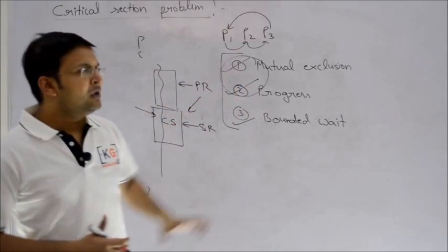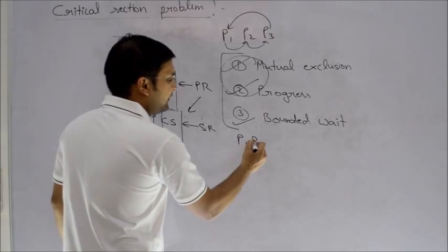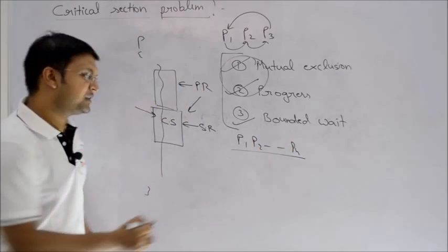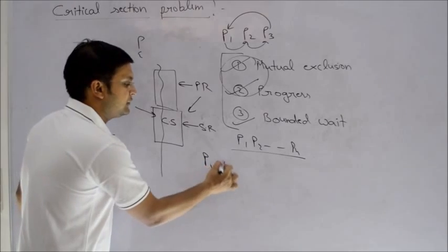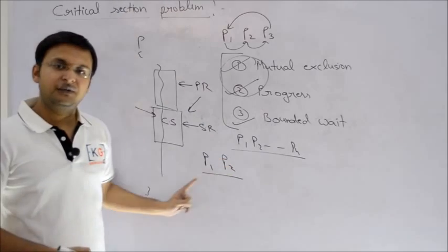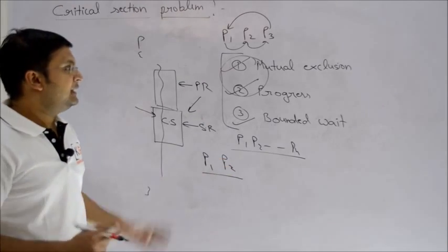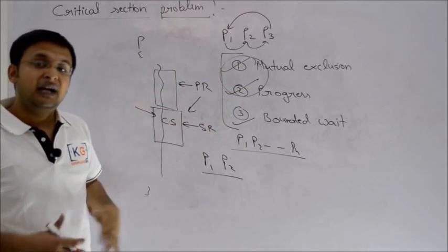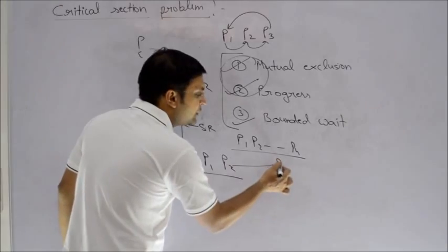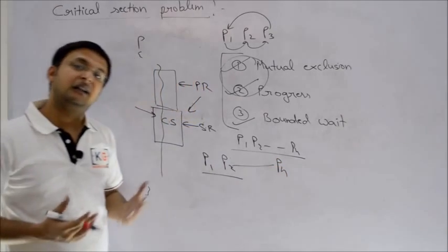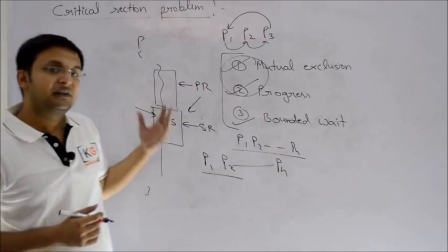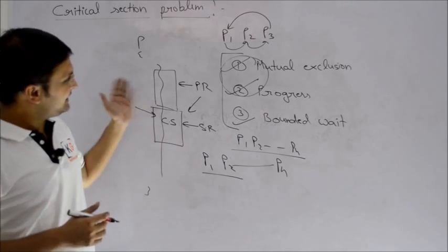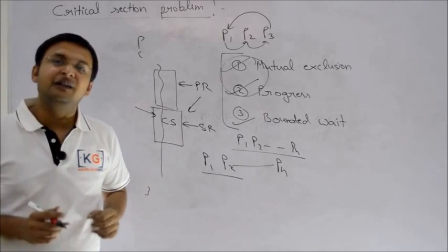First, we'll see what type of questions come in exams. There will be a solution. If there are multiple processes P1, P2, solving for all will be difficult. So first we'll try to understand two process solutions. Then we'll check whether they satisfy mutual exclusion, progress or bounded wait. If we succeed, then I'll extend this solution to an n-process solution. And then in the last, you'll understand how semaphores come into picture and what is the beauty about semaphore, how easily they solve all these problems. Thank you.